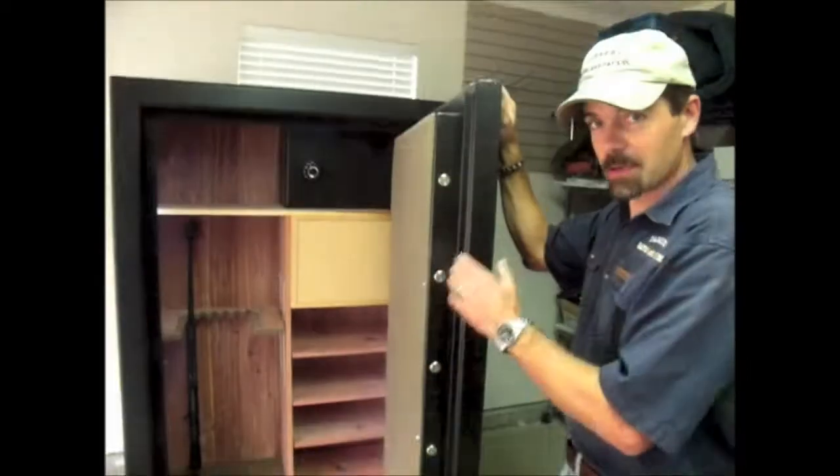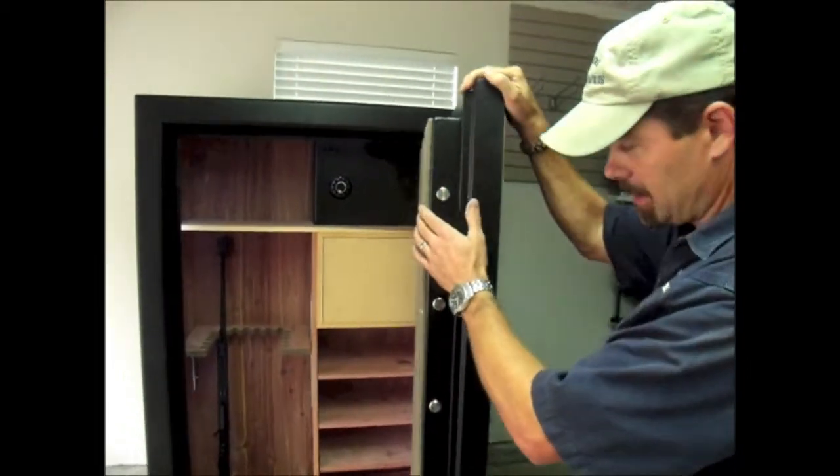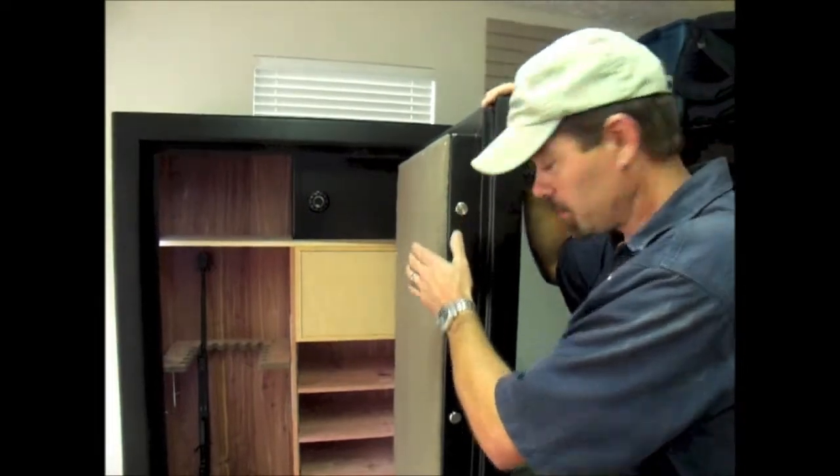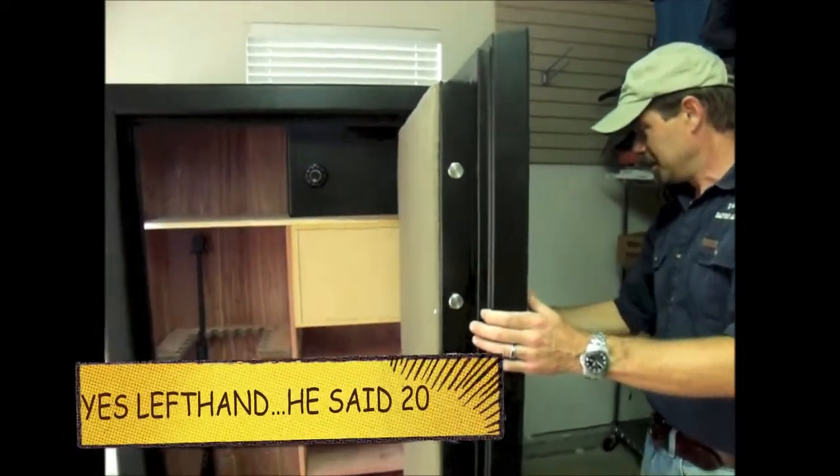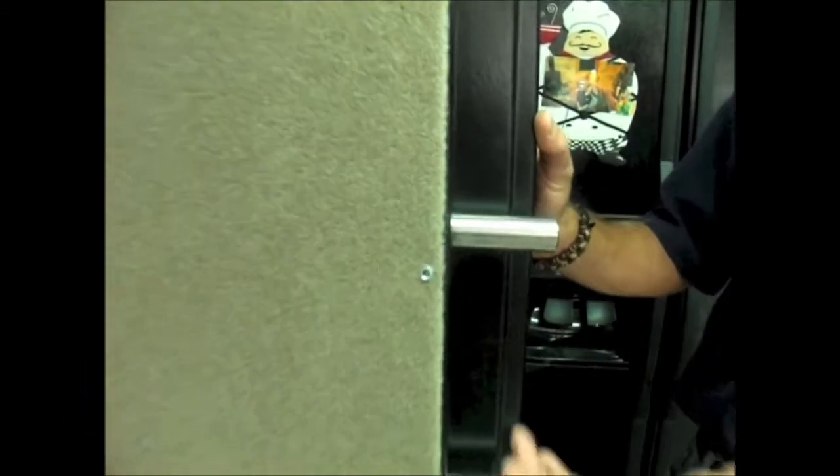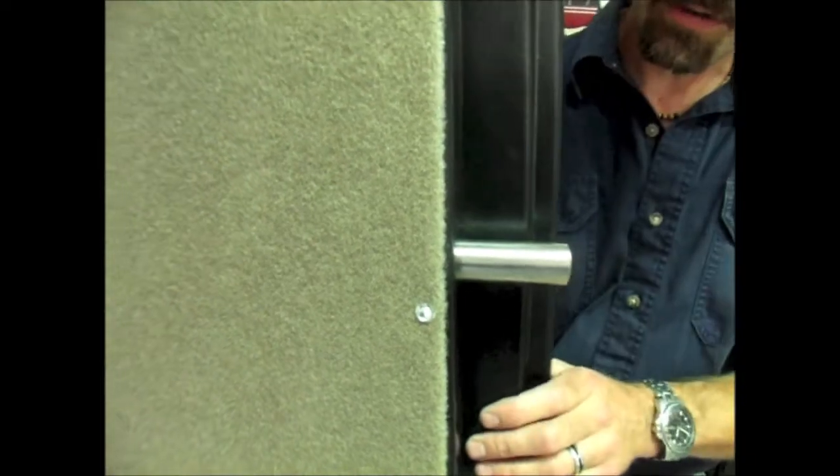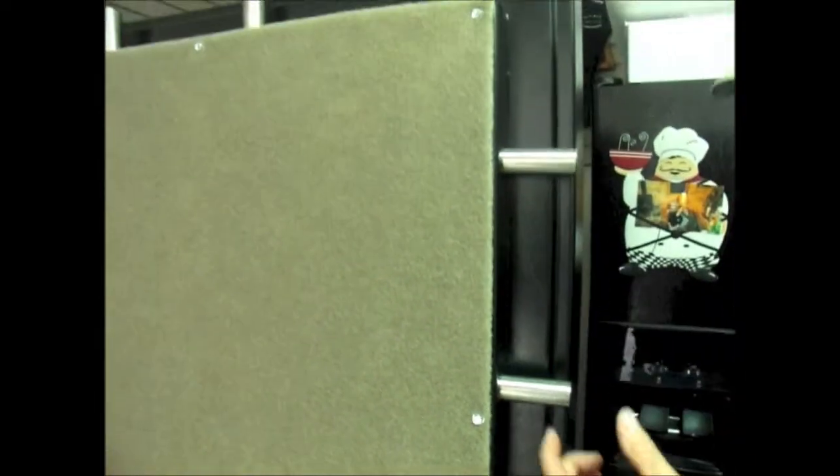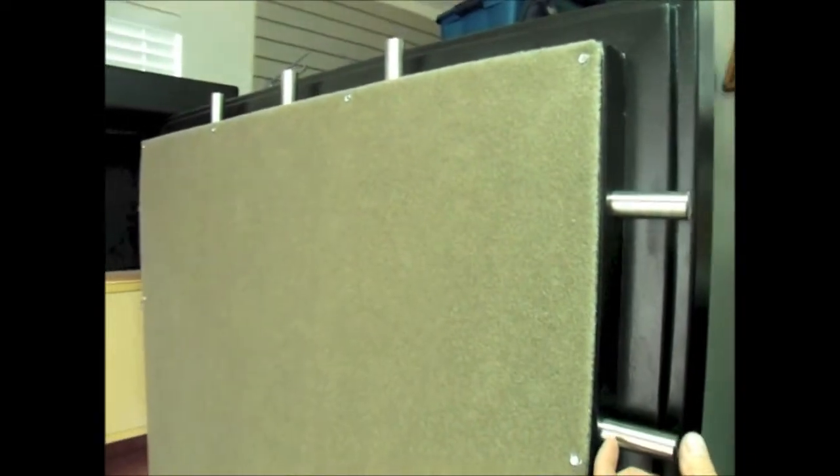This door is made out of half inch plate steel and on top of that we've got stainless steel locking bolts. We've got 20 of them on this safe. So we roll the pins here, roll the bolts, these extend those are a good what, three inches? Yeah, they're about three inches.